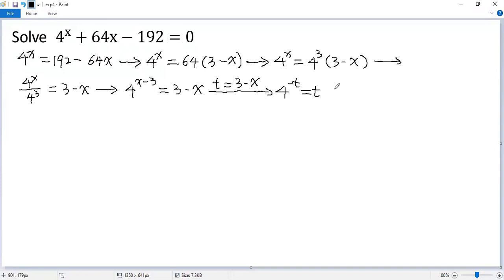To solve the resulting equation, let's try to eliminate t from the left side. To do that, both sides raised to the power of negative 1 over t. So we get 4 to the power of negative t, then raised to the power of negative 1 over t.